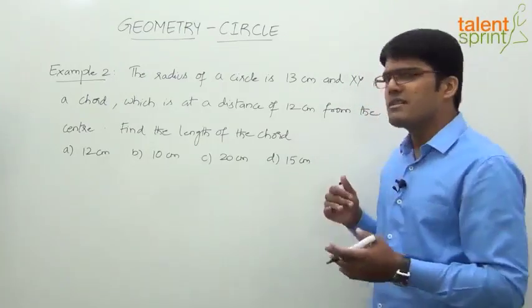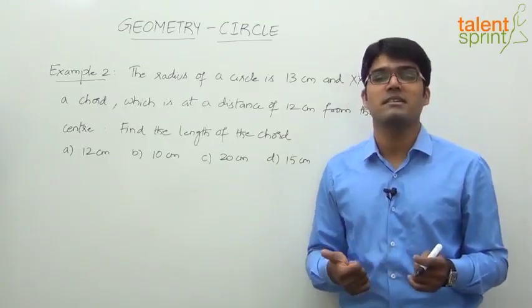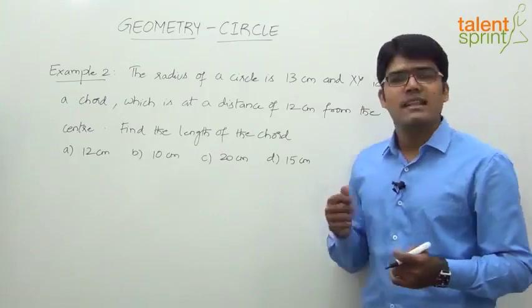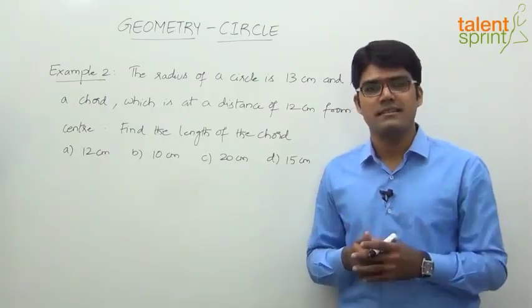If you observe, this is similar to what we have done in example one. The only difference is in example one we were asked to find out the radius of the circle, and this time it is about the length of the chord. So the concept is going to be the same. We have to use the Pythagorean theorem.